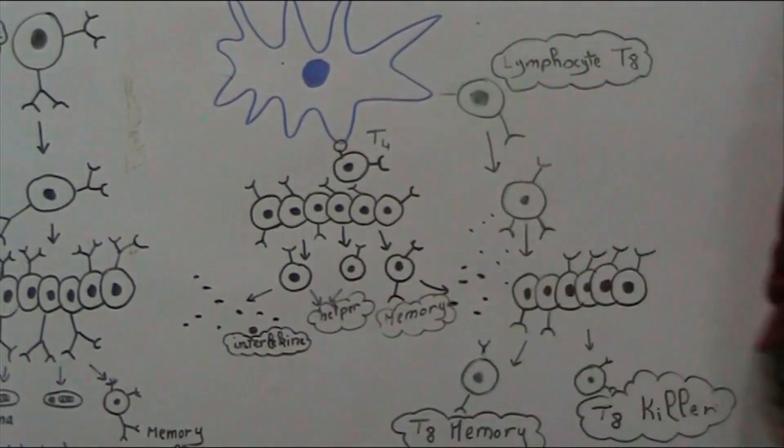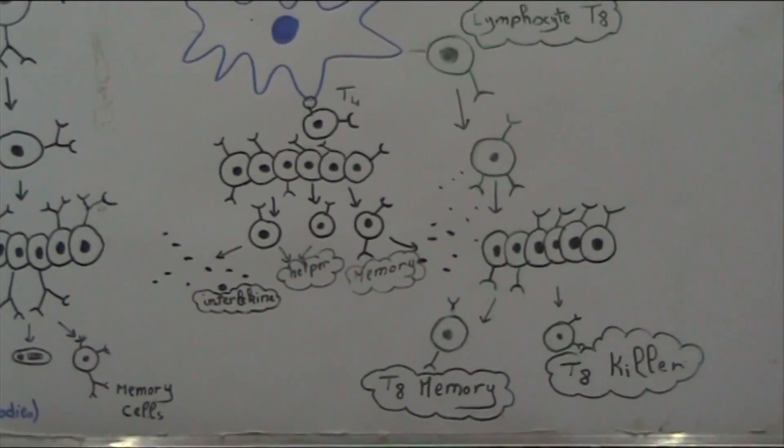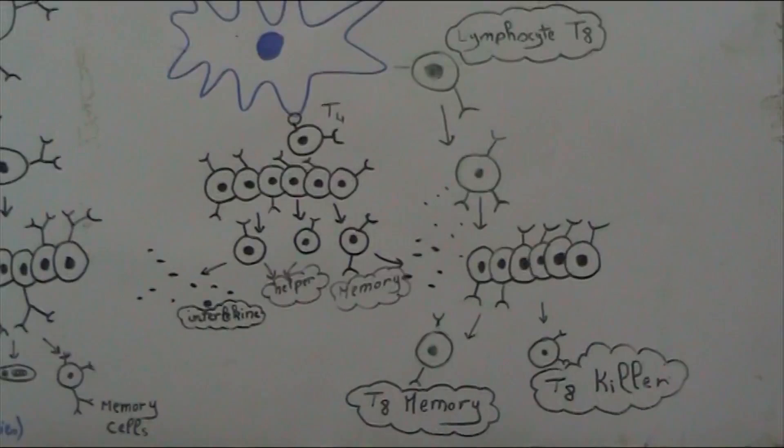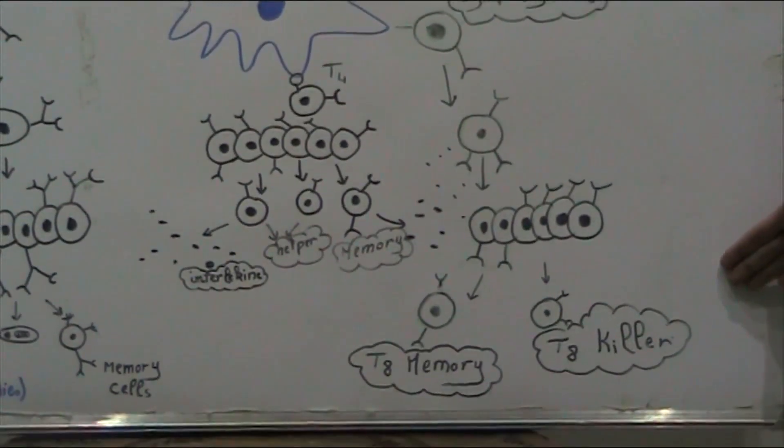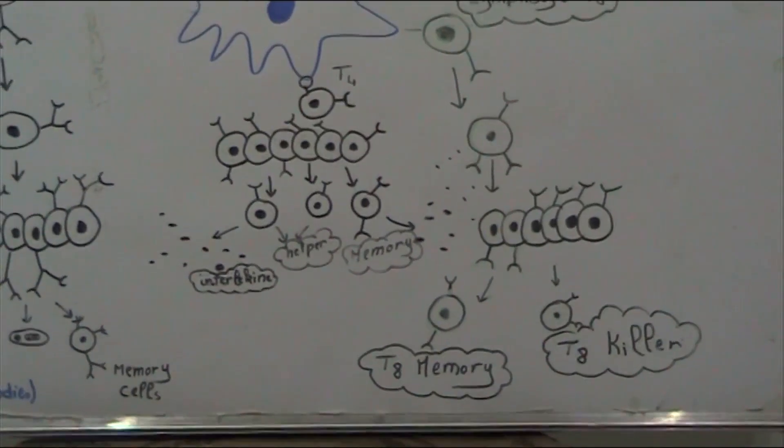T8 cells intercept enterlechin to get multiplied into killer T cells that will destroy the antigen and memory T cells. That's the cell-mediated response.